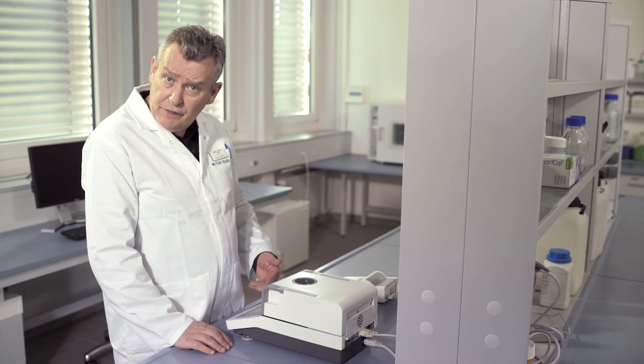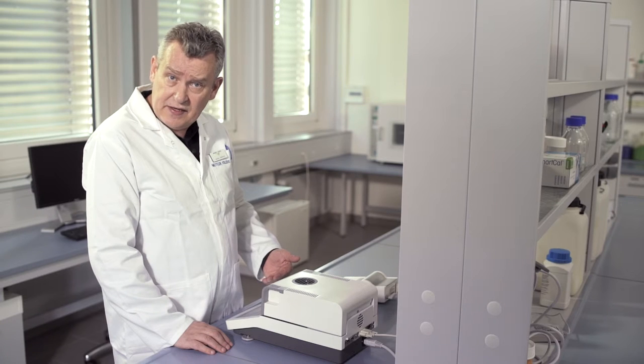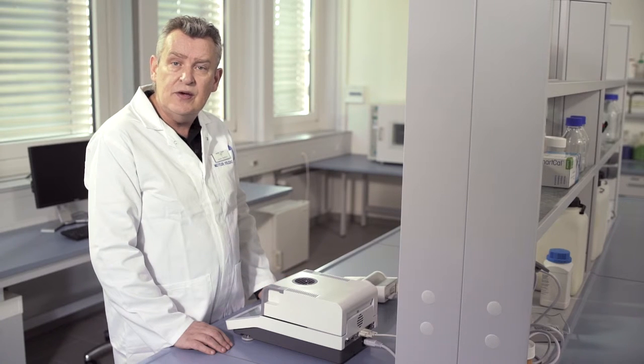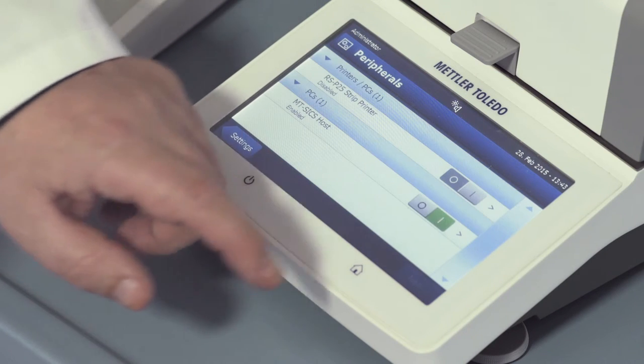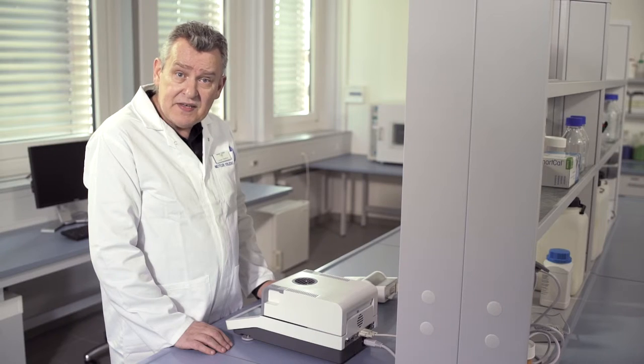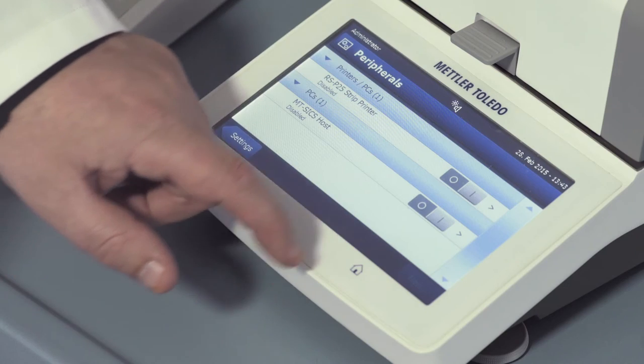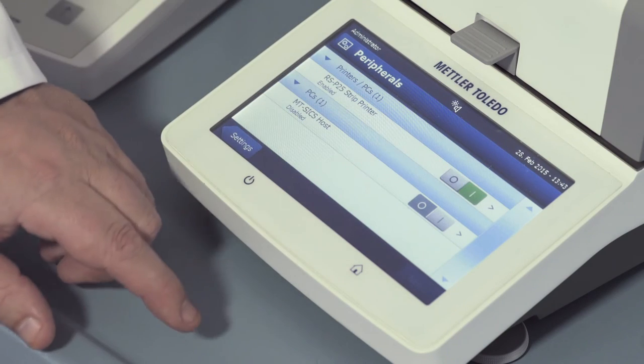However, you can also define customized interface settings in the menu of the HC103. Confirm the default settings simply by pressing save. And now, finally, activate the printer.